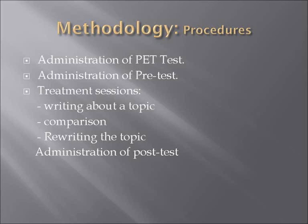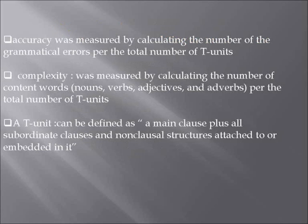The procedure included: administration of PET test, administration of pre-test, treatment sessions involving writing about a topic, comparison, and rewriting the topic, followed by administration of the post-test. Accuracy was measured by calculating the number of grammatical errors per the total number of T-units. Complexity was measured by calculating the number of content words per the total number of T-units. A T-unit is defined as a main clause plus all subordinate clauses and non-clausal structures attached to or embedded in it.